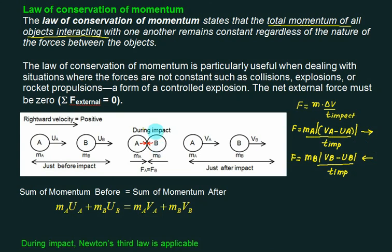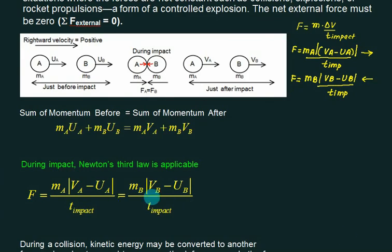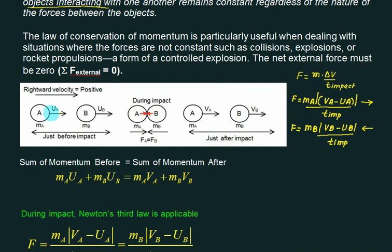Sometimes you are asked to find the force: force equals mass times change in velocity divided by time of impact — take only the positive side. Also note the condition: Ua must be greater than Ub. If Ua is less than or equal to Ub, the bodies never catch each other and impact is not possible.